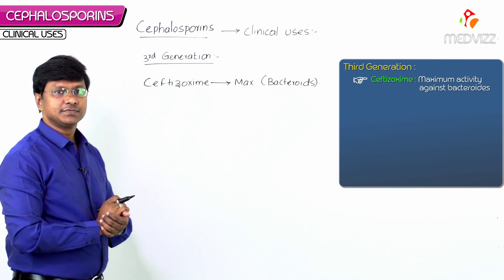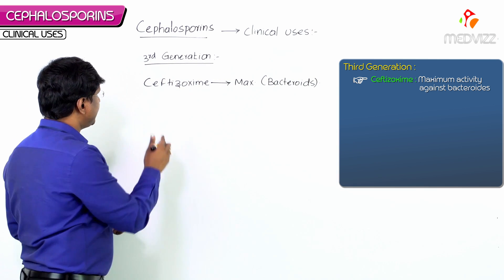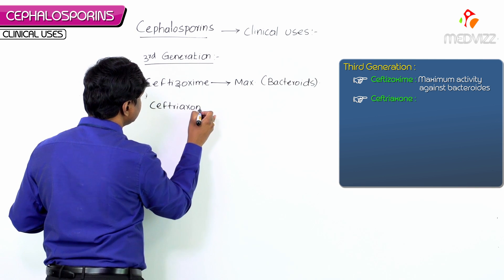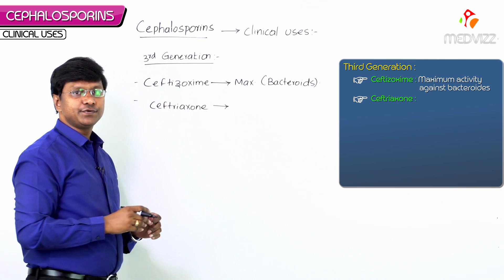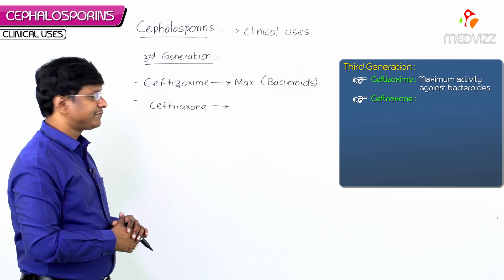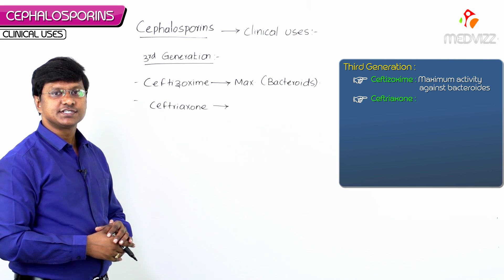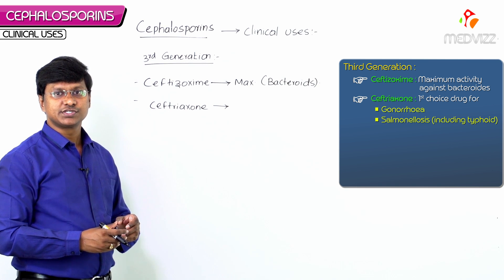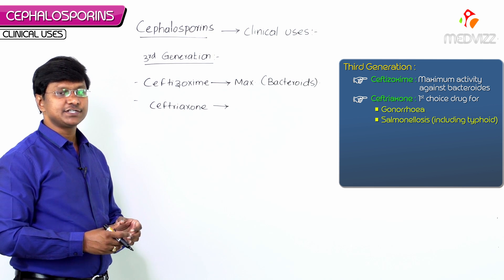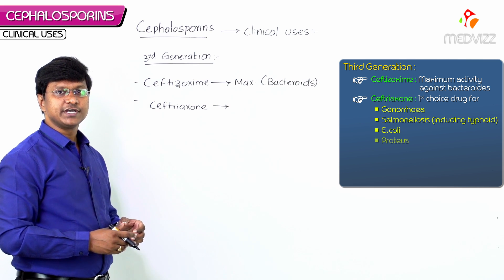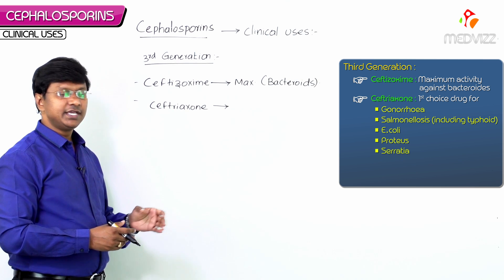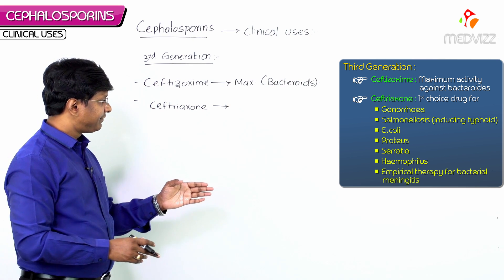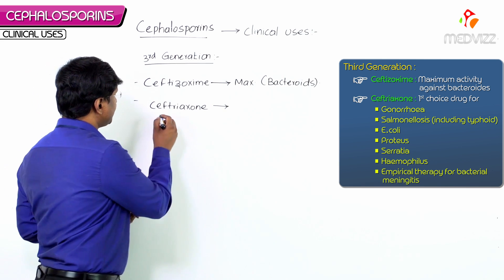An important third generation cephalosporin is ceftriaxone. It is the first choice drug for gonorrhea, salmonellosis including typhoid, E. coli sepsis, Proteus, Serratia, Haemophilus infections, and it is the first choice drug for empirical therapy of bacterial meningitis.